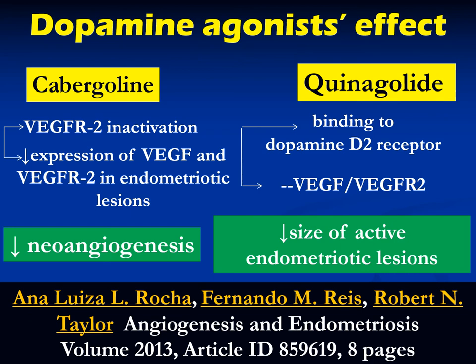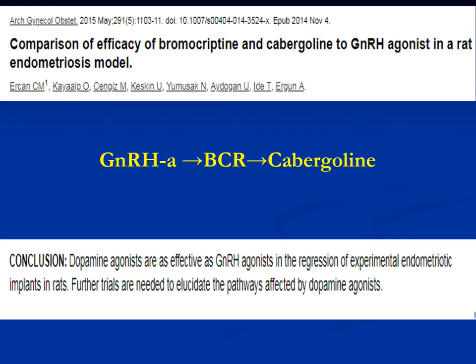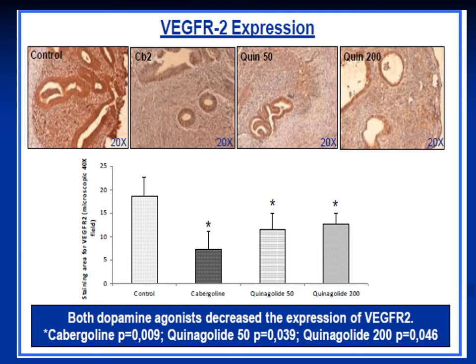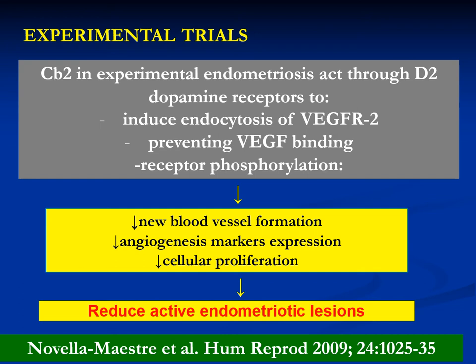Cabergoline leads to inactivation of receptors and decreased expression of VEGF and its receptors in endometriotic lesions, while quinagolide binds to dopamine receptors and inhibits VEGF and VEGF receptor 2. Cabergoline decreases new angiogenesis, while quinagolide decreases the size of active endometriotic lesions as proved in one study. The effect of dopamine agonists is at least similar to gonadotropin-releasing hormone agonists in treating endometriosis in some animal studies, with decreased blood vessel formation, decreased angiogenesis marker expression, and decreased cellular proliferation as the main mechanisms.